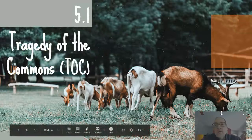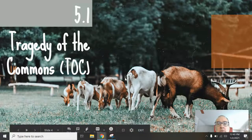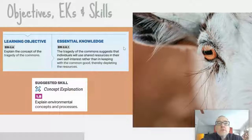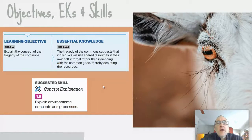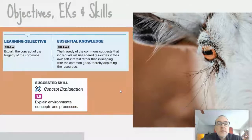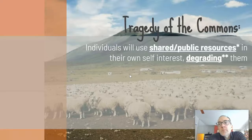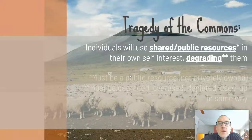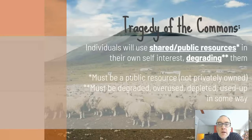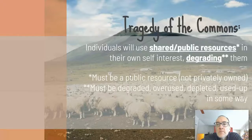The first topic today is 5.1, which has to do with the tragedy of the commons — here you can see some goats out in a field. You should be able to explain this concept and process, know when it occurs, and know some examples and ways of addressing it. The tragedy of the commons is when individuals use a shared public resource in their own self-interest, oftentimes degrading it. It must be a public resource — meaning owned by a government agency or public land — and it must be degraded, overused, or depleted in some way.